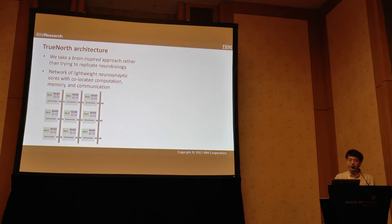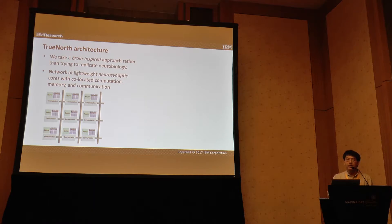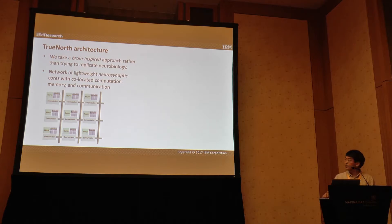That's why each core has its own SRAM for the neuron parameters and weights, and they only communicate when events happen — that's why there are spiking neurons, not conventional neurons.